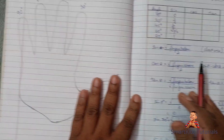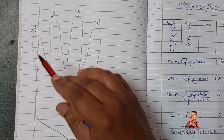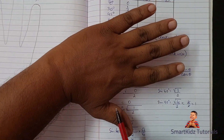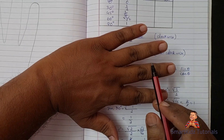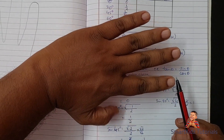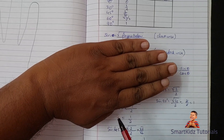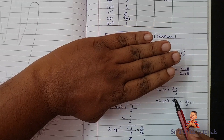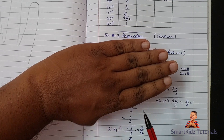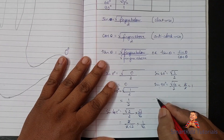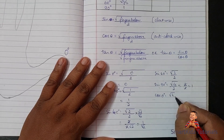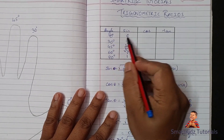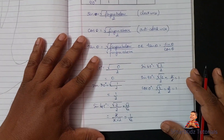Now we go to cosine — it's slightly different. The degrees remain the same with respect to the fingers, but the formula changes: now we look at fingers above the closed finger. For cos of 0 degrees, I close the thumb and look at fingers above it. There are 1, 2, 3, and 4 — so cos of 0 degrees equals square root of 4 upon 2, which is 2 upon 2, which gives us 1.